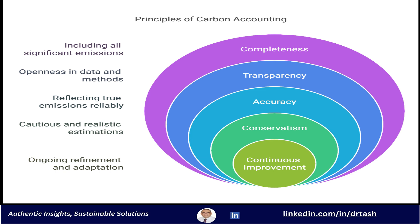Then you've got accuracy and consistency — if you measure something one way this year, you have to measure it the same way next year, making sure your data reflects the actual emissions. Conservatism basically means being cautious, not overestimating your reductions or underestimating your emissions — no fudging the numbers to make things look better. And lastly, continuous improvement means the work never really ends: always reviewing processes, looking for ways to do better, staying up to date, and refining that carbon accounting. Those principles are woven throughout the whole standard, guiding everything else.